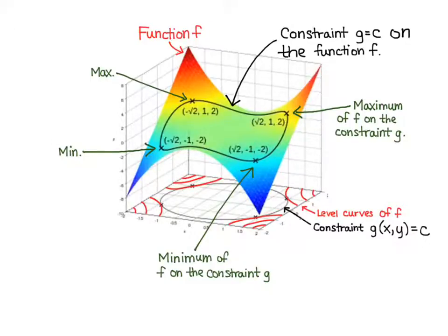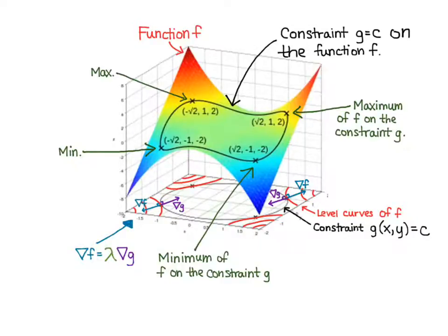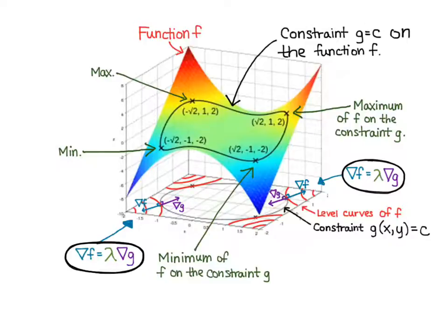Here are the level curves of f, drawn in red down on the xy axis. You can see that at the points where there are maximums or minimums, the level curves are tangent to the constraint g, or vice versa. We have the gradient of f perpendicular to the level curve of f, and the gradient of g perpendicular to the constraint g, and because they're parallel, gradient of f equals lambda times gradient of g. So no matter whether we're looking at a maximum or minimum, that relationship holds true.